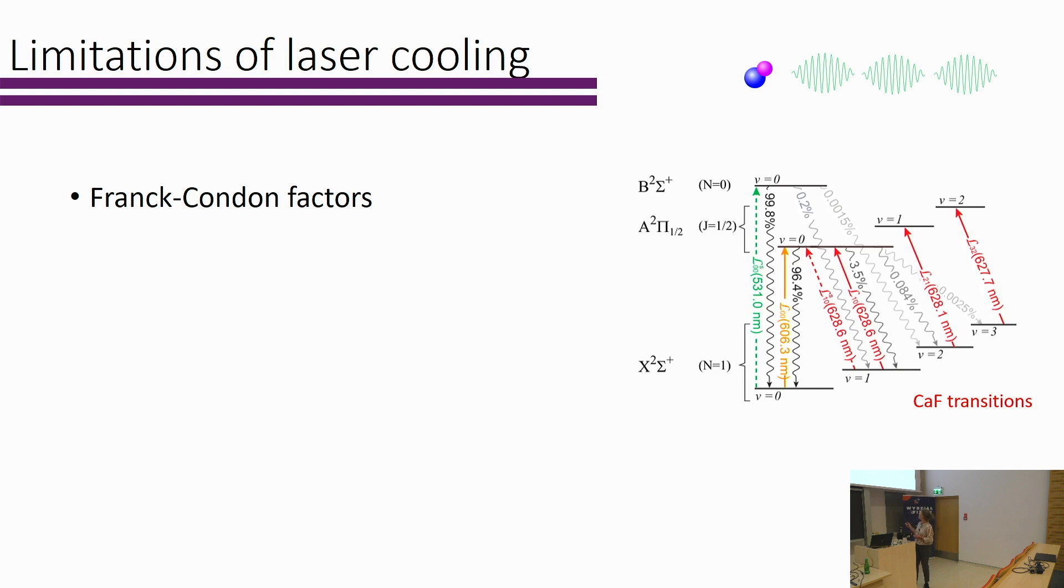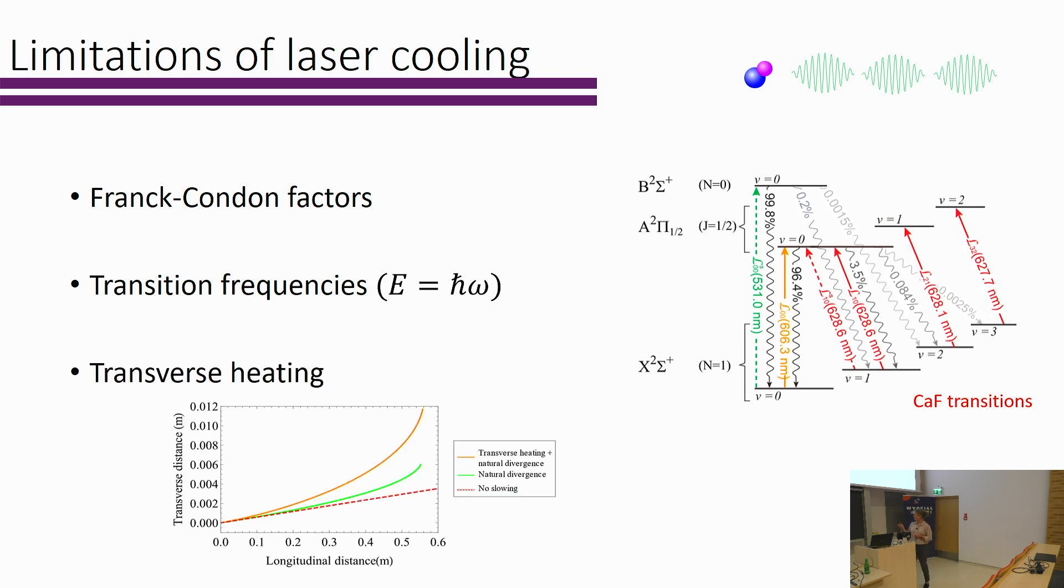Firstly, you need to have this very closed transition. Although, as we heard from Anna, maybe there's exciting possibilities of getting around having a high Franck-Condon factor. The transition frequency is very important. As Stefan highlighted, if you can go to very short wavelength, then you can have very short slowing distances, but you may need to have an in-house laser technician. And finally, every time you scatter a photon, you actually cause some heating. This can lead to this pluming effect of your beam as it slows down. All of these three things combined can make it quite difficult to load a magneto-optical trap.